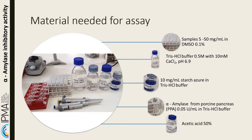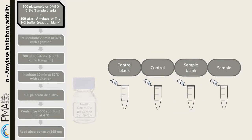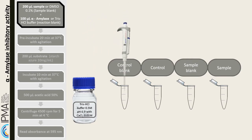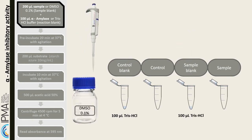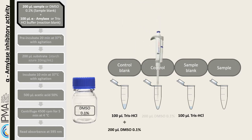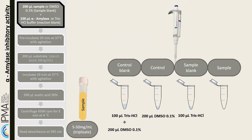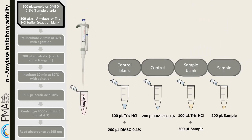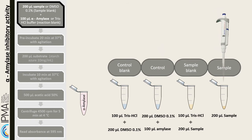This assay requires a control blank, a control, a sample blank, and a sample reaction, as shown on screen. For the sample reaction, add 200 microliters of sample and mix with 100 microliters of enzyme. Samples must be tested at various concentrations and in triplicates. For the control blank, replace the sample volume with DMSO 0.1% and the enzyme volume with Tris-hydrochloride buffer. The sample blank is done by mixing the sample with buffer instead of enzyme. For the reaction control, replace the sample volume with DMSO 0.1%. Then pre-incubate for 20 minutes at 37 degrees Celsius with agitation.